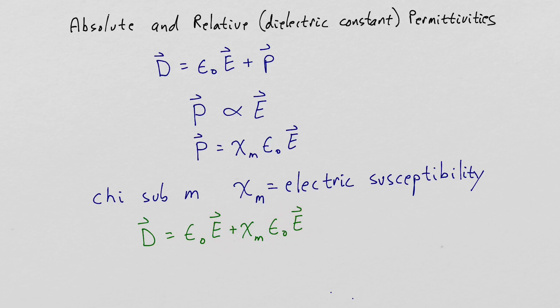To obtain the electric flux density field is equal to the permittivity of free space times one plus chi sub m times the electric field intensity.